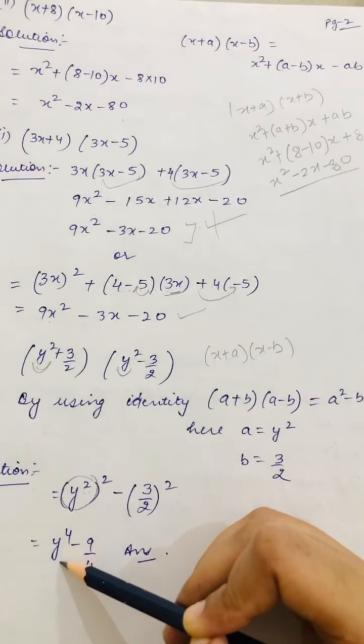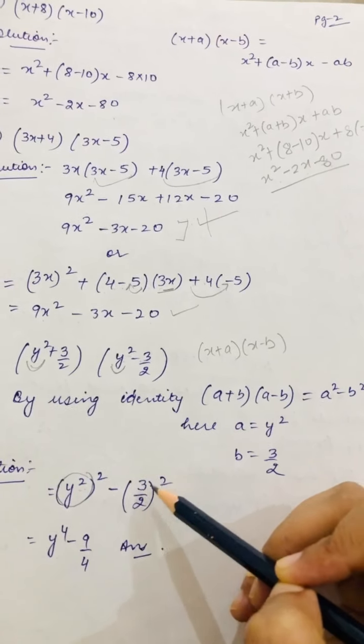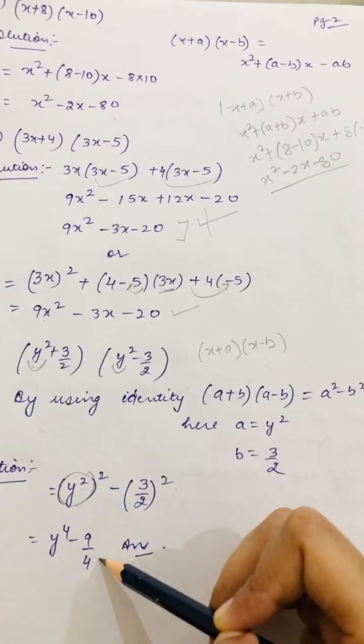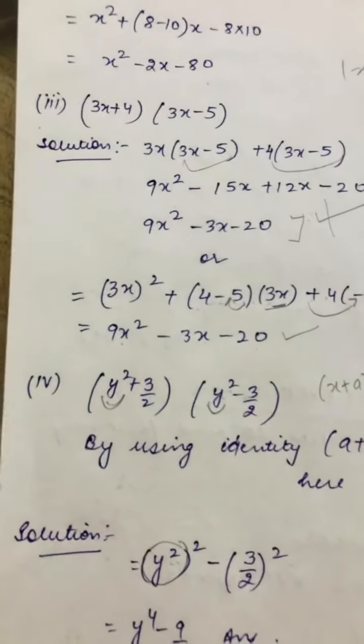y² square will happen. 2×2=4 came. After that b square, minus sign is there, minus applied. b is 3/2, its square: 3×3=9, 2×2=4. This is the answer. If you have any trouble in this, you can easily ask.